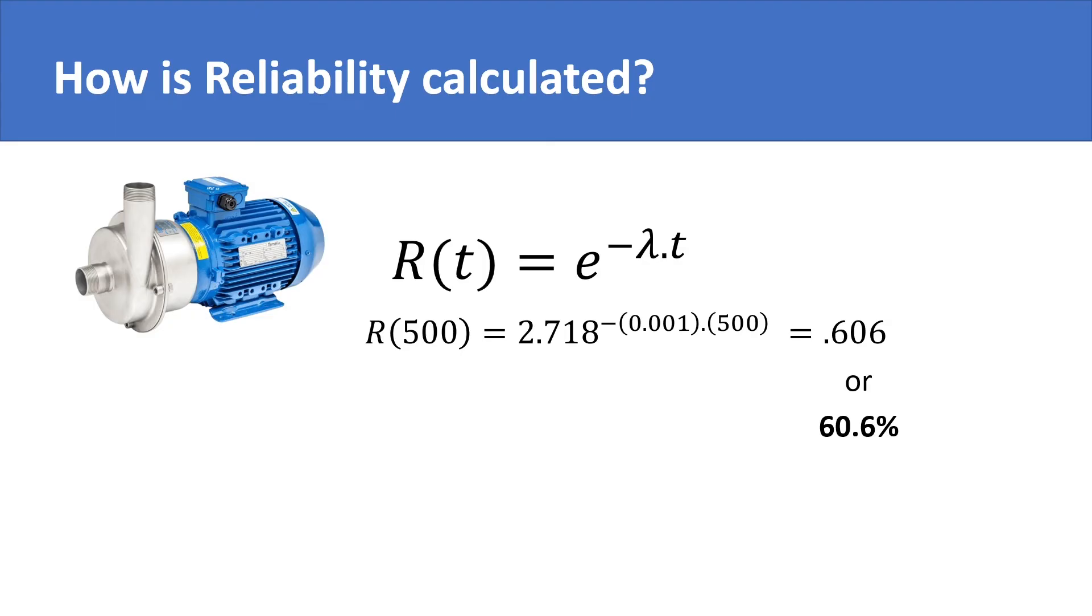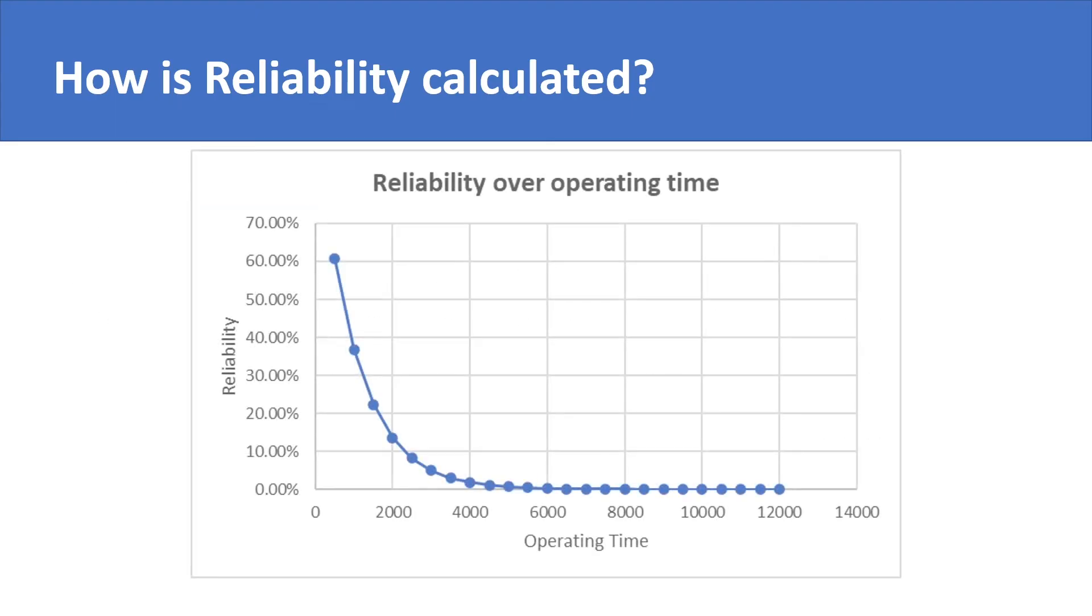We can plot a graph to see the trend of reliability over increasing operational time. Reliability of our example pump decreases with increase in time, which is understandable, because of its high failure rate. The pump cannot be trusted to last for long intervals of time without a breakdown.